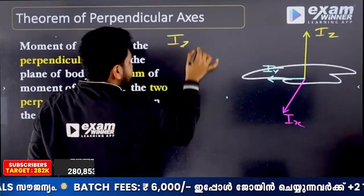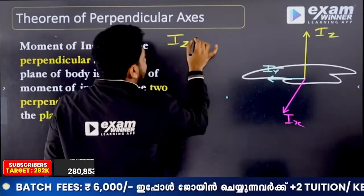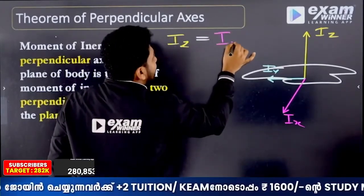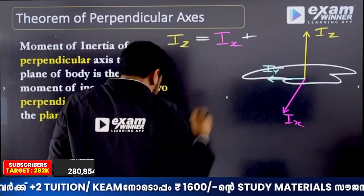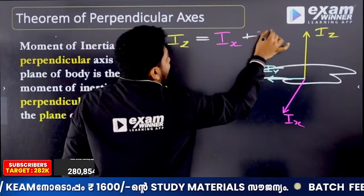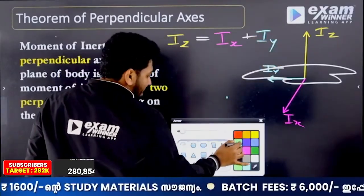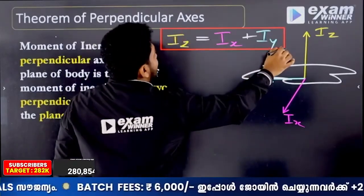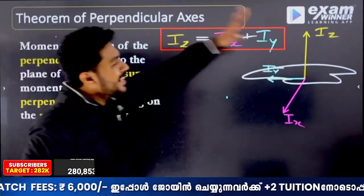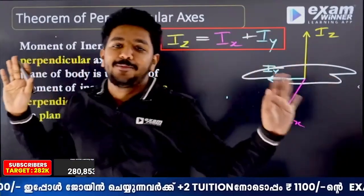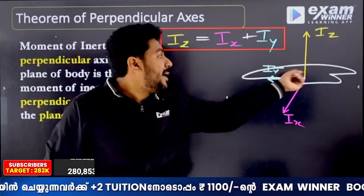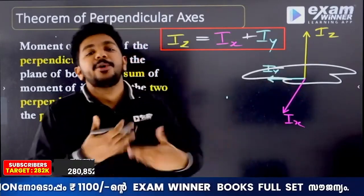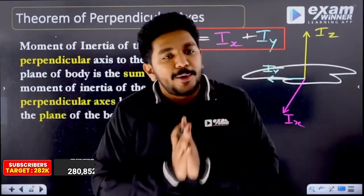IZ will be equal to one axis. I have Iz, and I will get the perpendicular axis result: Iz is equal to Ix plus Iy. It is the perpendicular axis theorem — it is the sum of Ix and Iy.